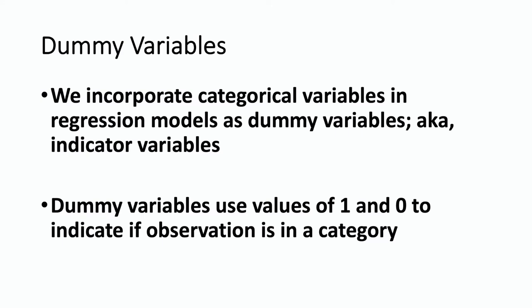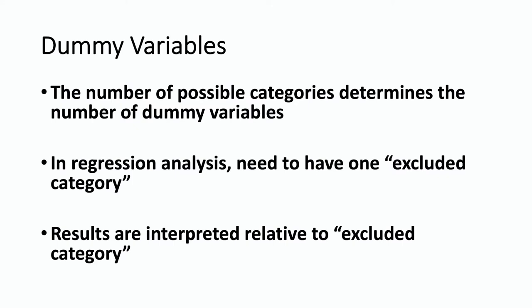Dummy variables use values of 1 and 0 to indicate if an observation falls in a particular category. When using dummy variables in a regression model, the number of possible categories determines the number of dummy variables you might have. But when you actually incorporate them into a regression model, you need to have what we call one excluded category — one category that we don't put into the regression model. The results for the dummy variables we do include are interpreted relative to that excluded category.